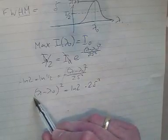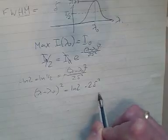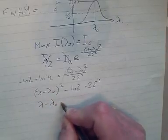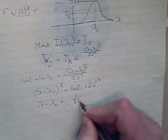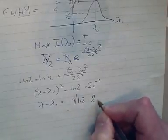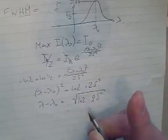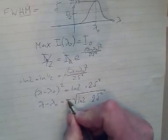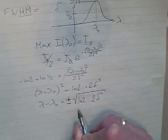I can just pull the square root on both sides, and I've got lambda minus lambda zero equals square root of ln(2) times 2 delta squared. Bear in mind, you're pulling the square root, therefore you'll get two answers, plus and minus.